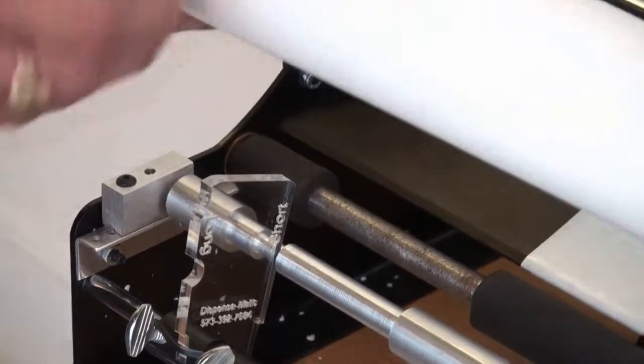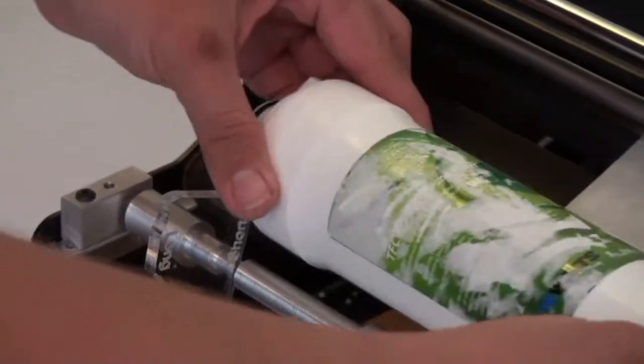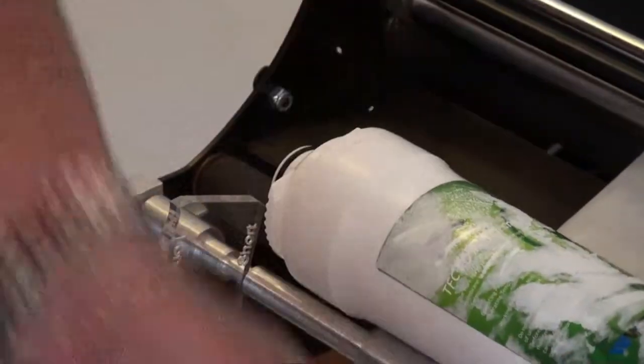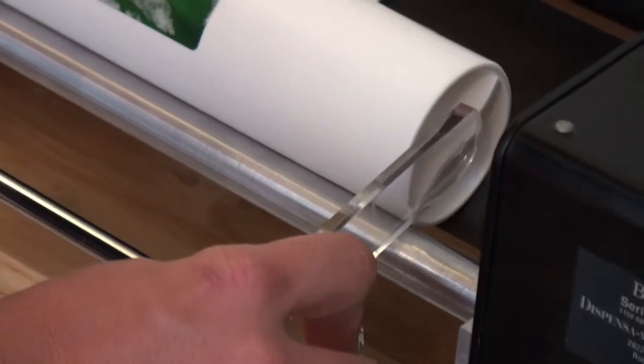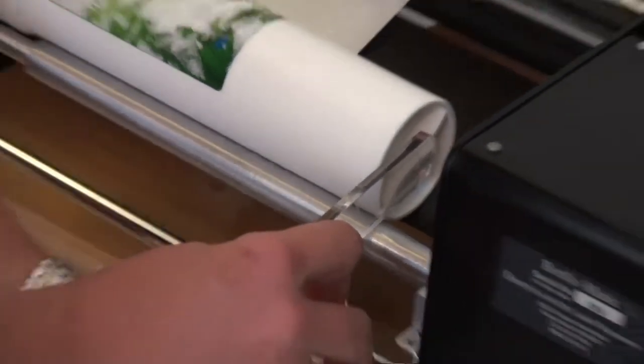And since the short filter is going to be in a different location, we're also going to have to change the bottle guide down here at the bottom. So that it kind of lines up your label up and down on the filter.